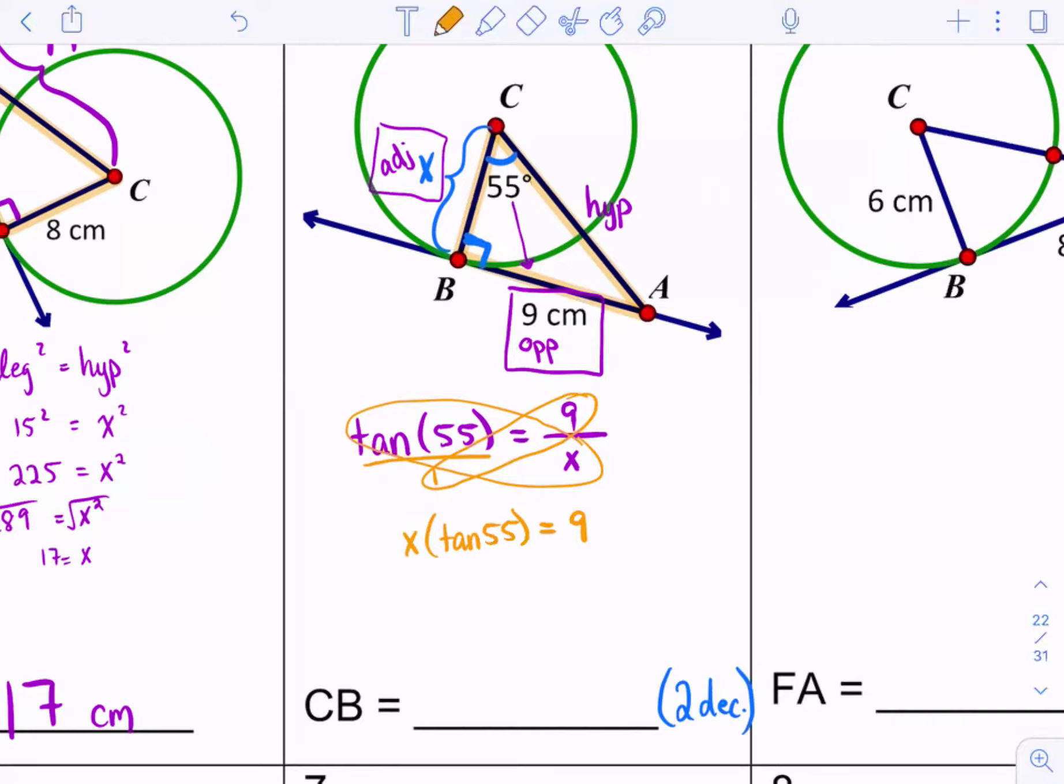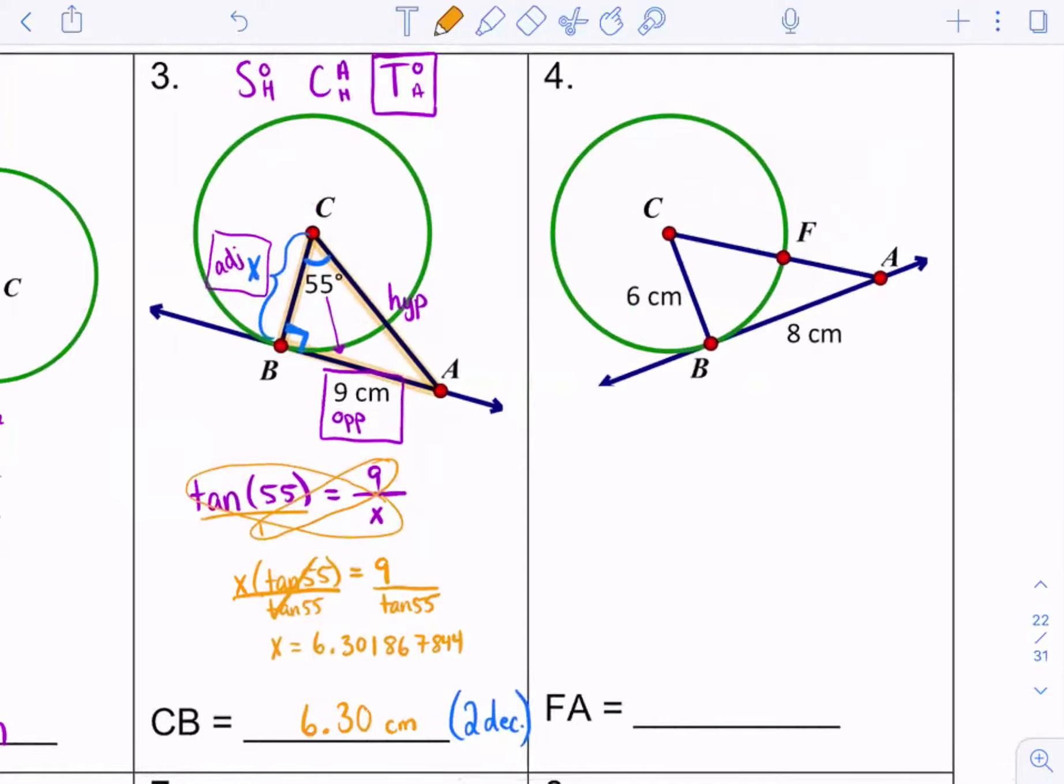So we want to get x by itself. So that means we have to get rid of the tan 55. So let's divide both sides by tan 55. And that will leave us with x by itself. So x equals nine divided by the tan of 55, close parentheses. And if you see in blue, it says rounds to two decimal places. So it will be 6.30. Very nice. Which is a reasonable number. Again, when you're looking at your answers, does it make sense? Is it reasonable? That side is shorter than BA. So it should be somewhere around nine, but less than nine.